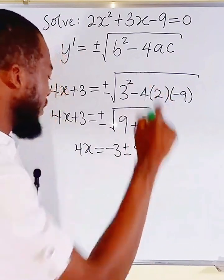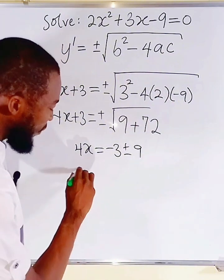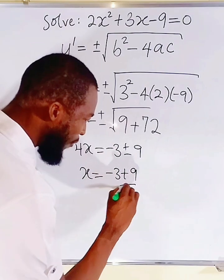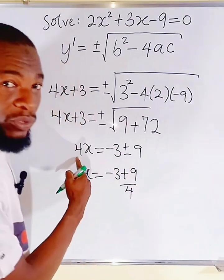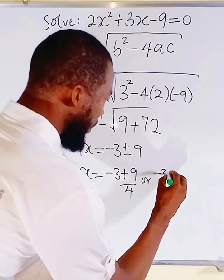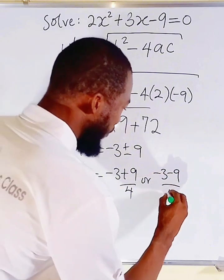Then, already we have plus or minus 9, because 9 plus 72 is 81. Square root of 81 is 9. So, finally, our x value could either be equal to minus 3 plus 9 divided by 4, if you decide to divide both sides by 4, or minus 3 minus 9 divided by 4.